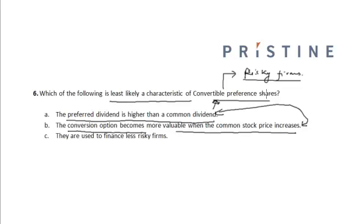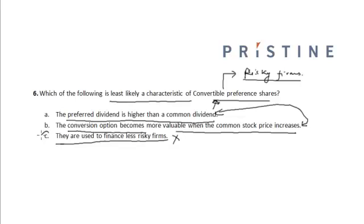These two are the characteristics of convertible preference shares which make them highly attractive to an investor, in spite of the fact that they are used to finance risky firms. Therefore, option C — which states they are used to finance less risky firms — is incorrect, and option C is the correct answer.